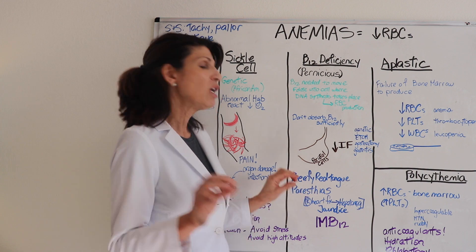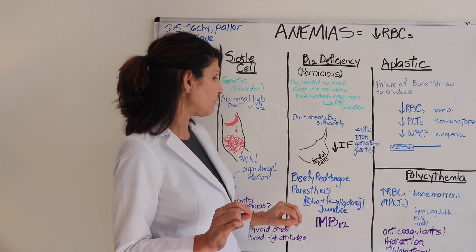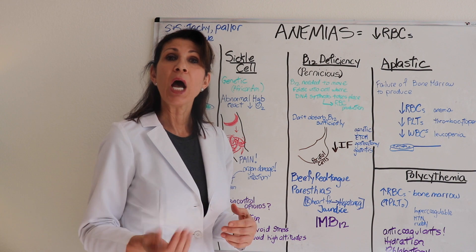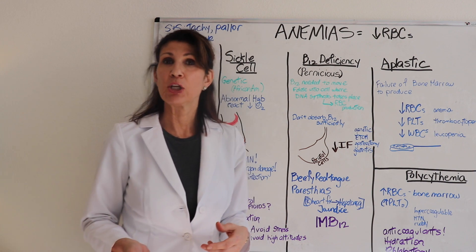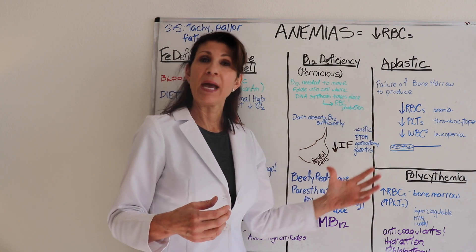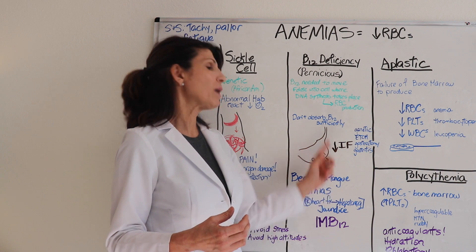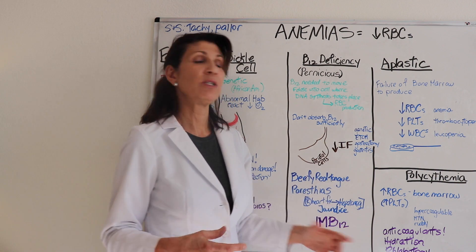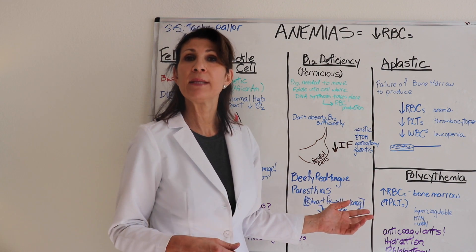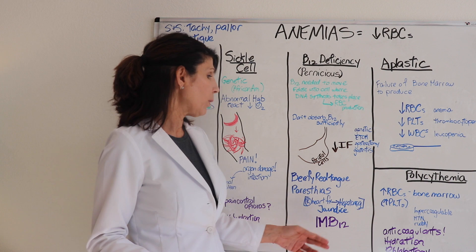B12-deficient patients may present with idiosyncratic signs such as a beefy red tongue and paresthesias of the extremities. Over time, these patients may also develop right cardiac failure, which leads to backup into surrounding organs and potential liver failure. This anemia is also unique in that patients may manifest jaundice due to subsequent hepatomegaly occurring with right heart failure.